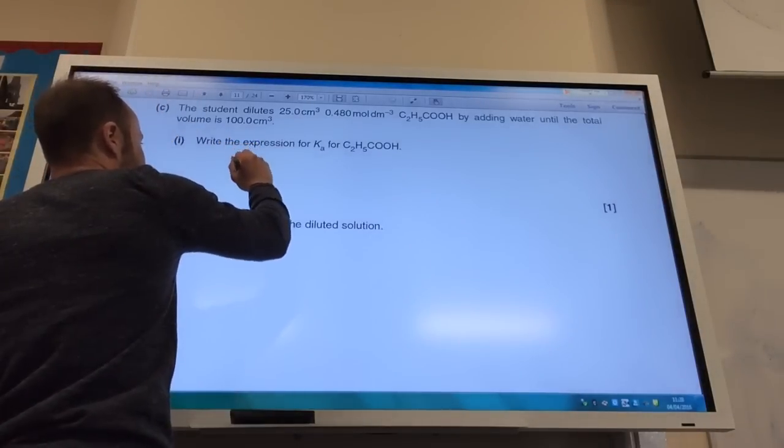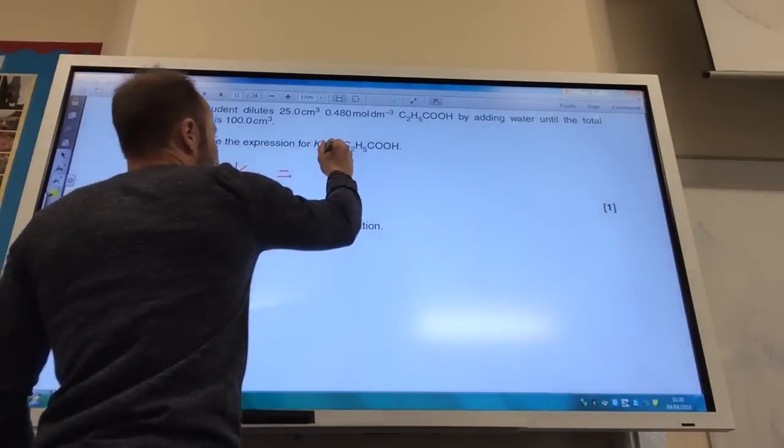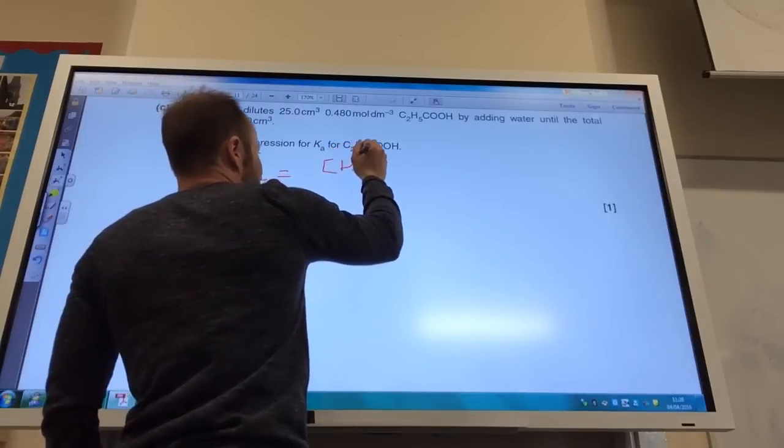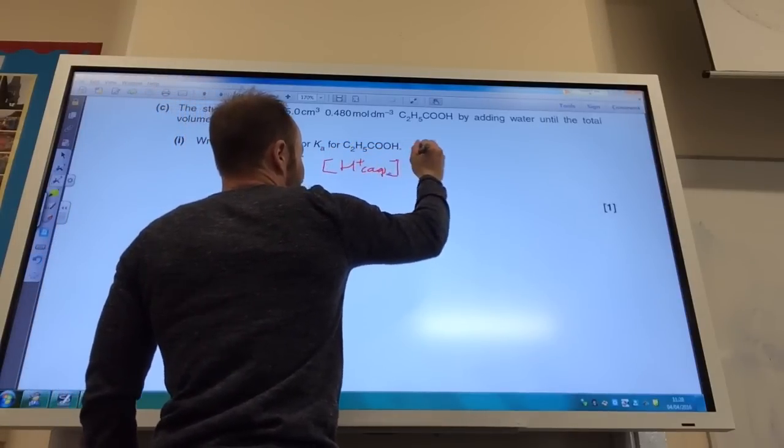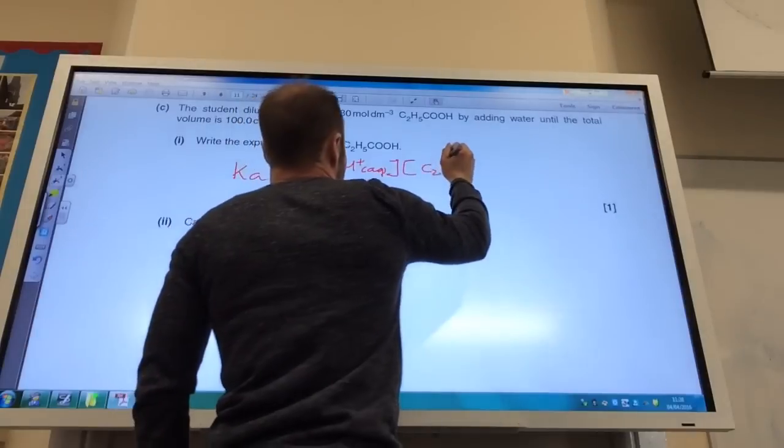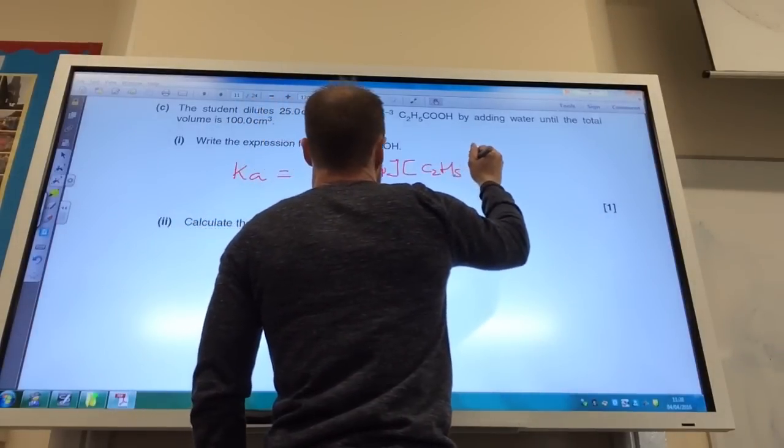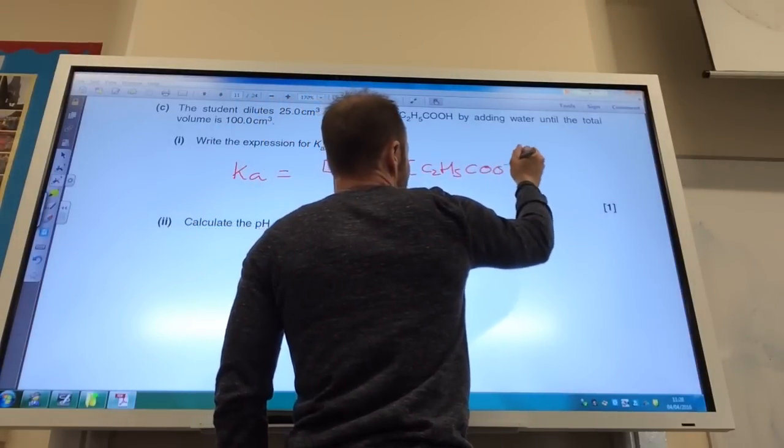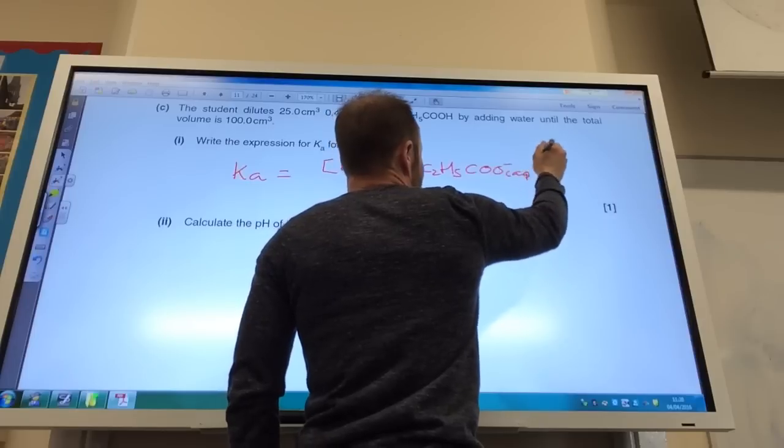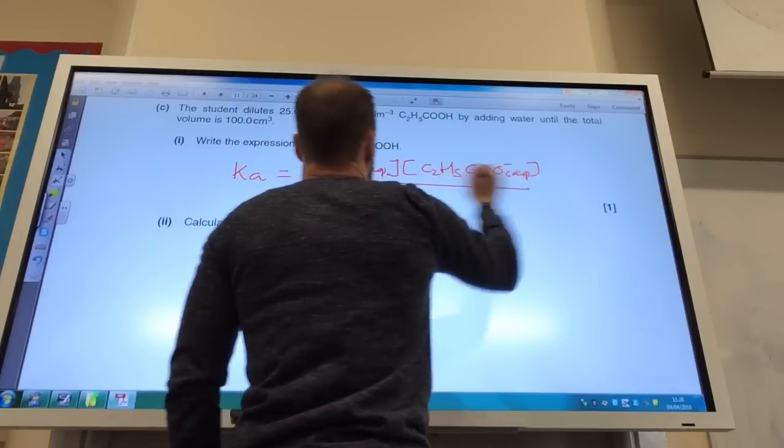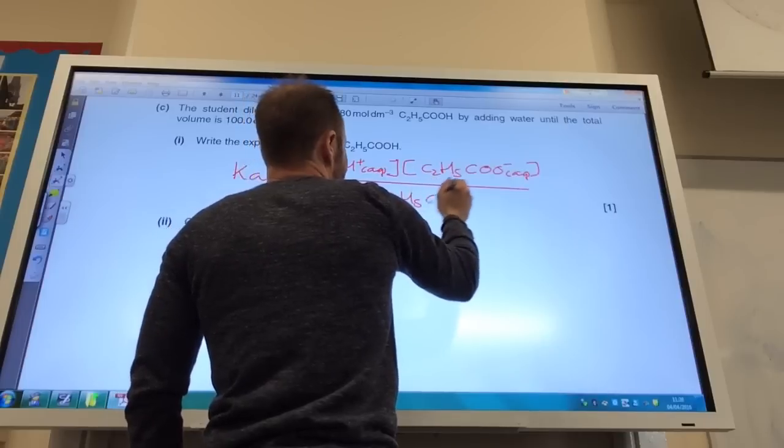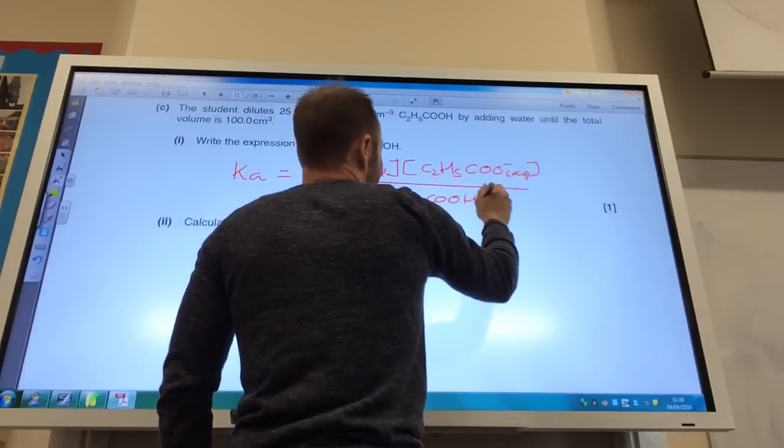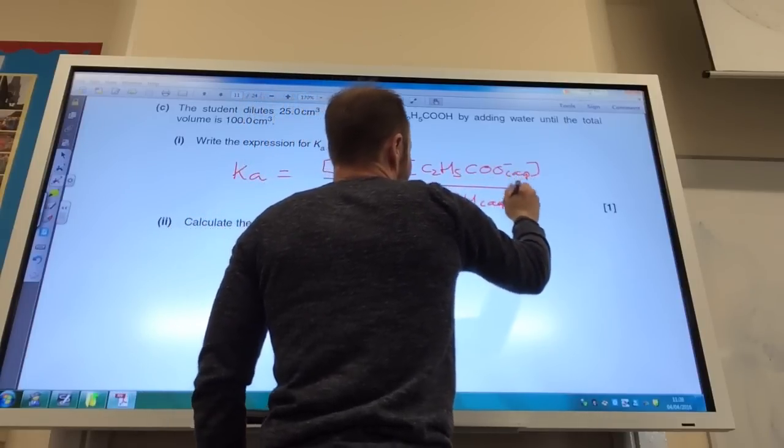So Ka is going to equal the concentration of H plus times by the concentration of C2H5COO minus aqueous divided by the concentration of the undissociated acid. Okay.